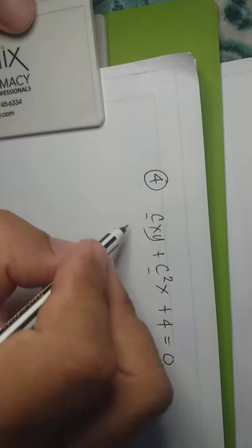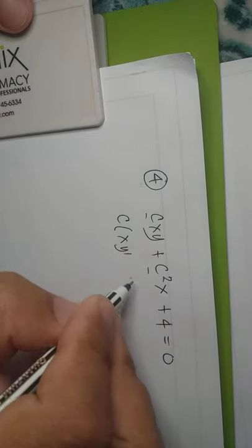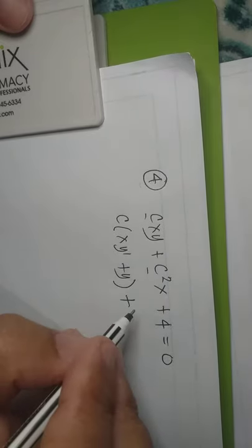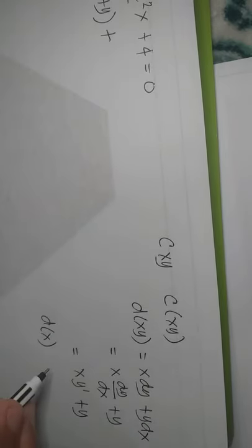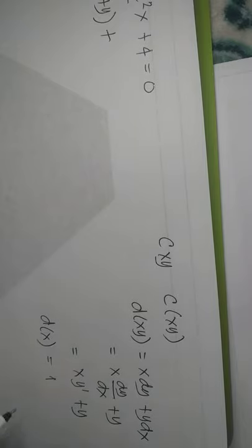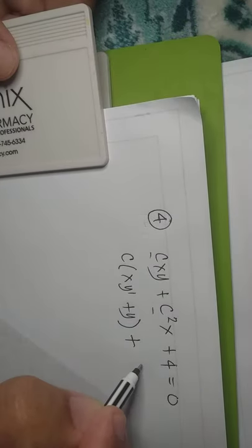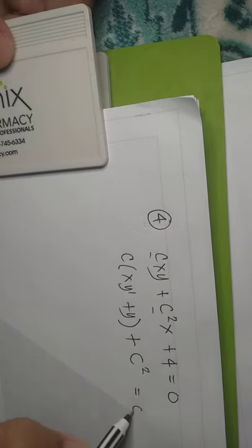Let's apply this to the original equation. So we have C times (XY prime plus Y) plus C squared times X. The differential of X is equal to 1, so we have C squared times 1. And the differential of a constant is 0, so this must be equal to 0.